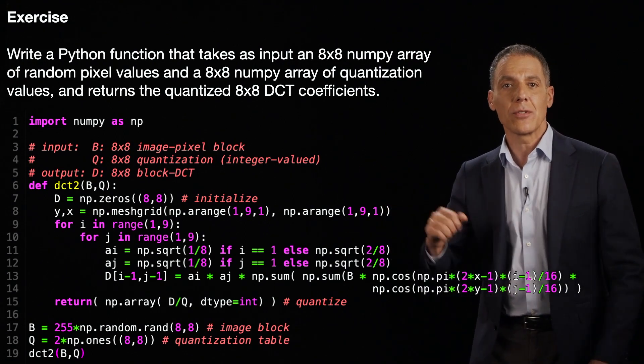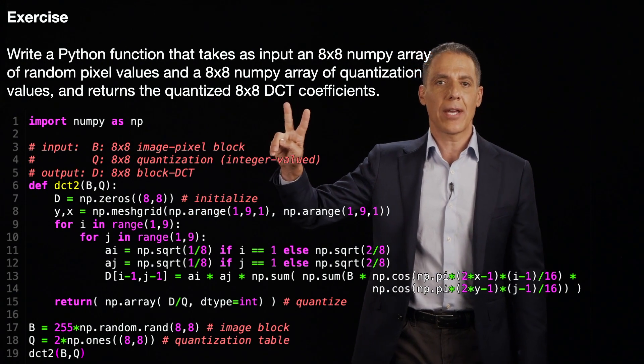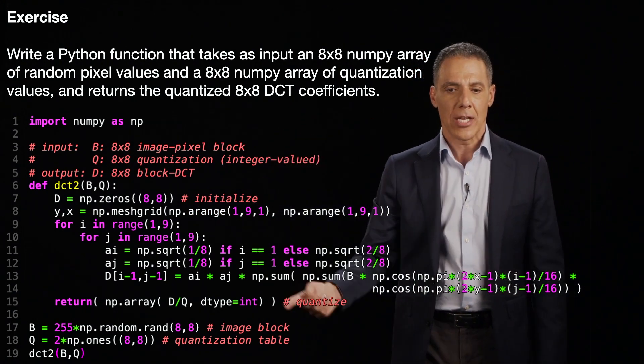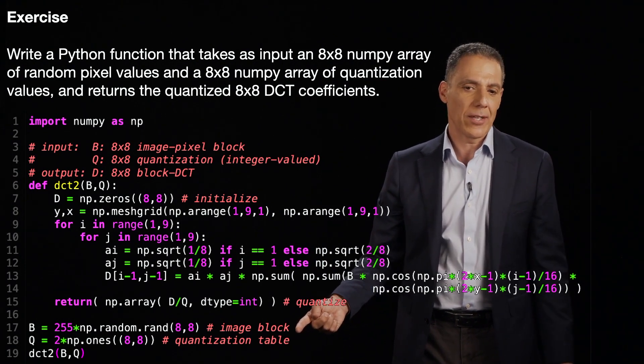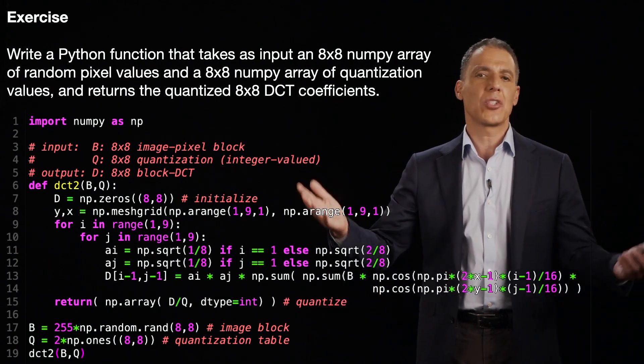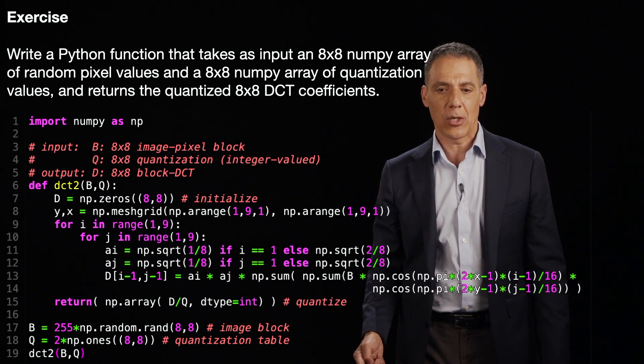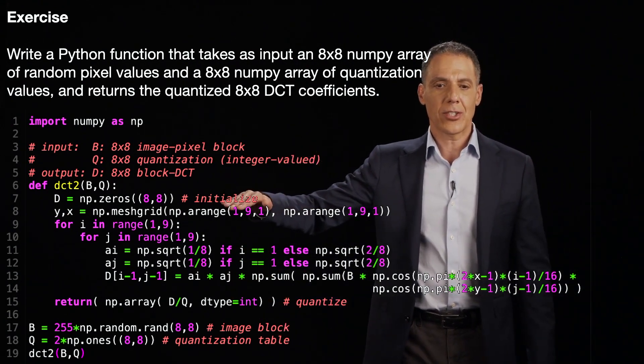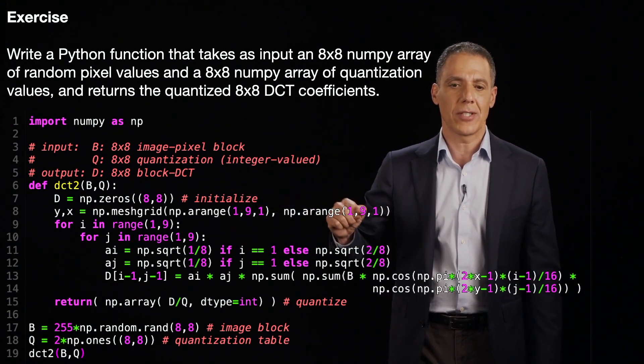All right, here's my solution for the DCT. As promised, we're going to write a function that takes in two NumPy arrays, b and q, b being the pixels, q being the quantization values. If we just go down here, you can see what it is. I've set b to be just a bunch of random values between 0 and 255. And I'd set q to be 2 at every value. Again, I don't care what the quantization value is. And then I'm going to go ahead and call the function. All right, let's go back up. We're going to initialize d. That's going to be the DCT to be a bunch of zeros because I'm going to start filling in values. I'm going to determine what are all the x, y coordinates in the image. This is a mesh grid command.